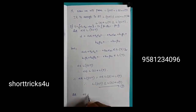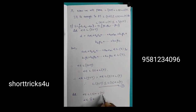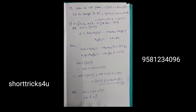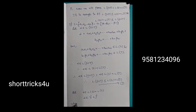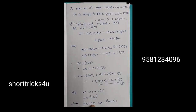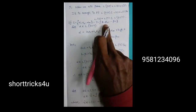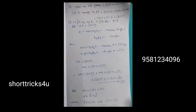Let alpha belong to L of S plus L of T. Then alpha equals gamma plus delta, where gamma belongs to L of S and delta belongs to L of T. Gamma and delta are simple elements.